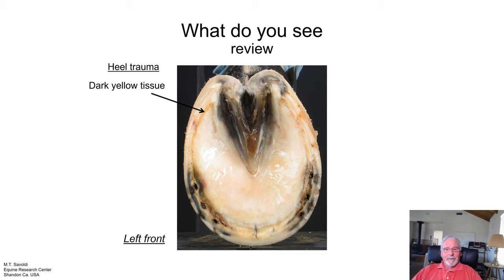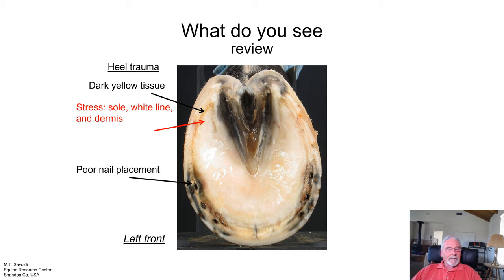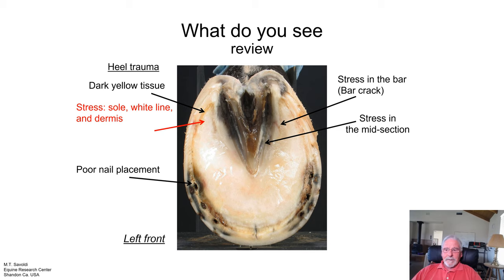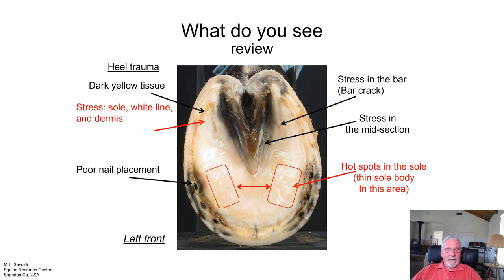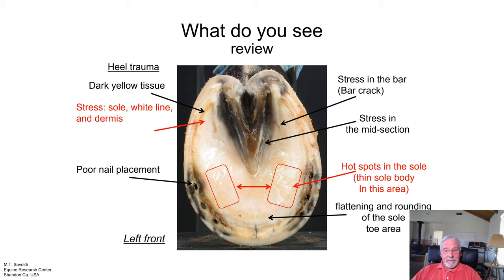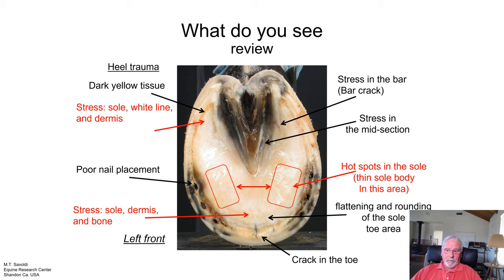Review: trauma and heel trauma with dark yellow tissue. Stress to the sole area. Pressure and poor nail placement. Our bar crack. Flattening in the midsection. Hot spots. Flattening and rounding of the toe area. You can see the bone pressing deep hard into the sole — sole thinning in that area. Stress into that area with the dermis. We showed you swelling to the dermis. And then the toe crack.